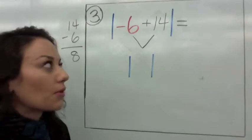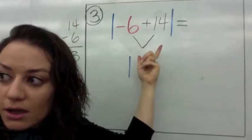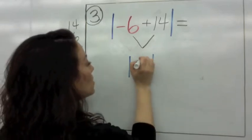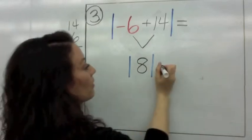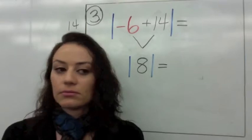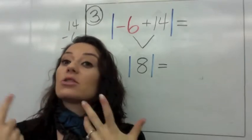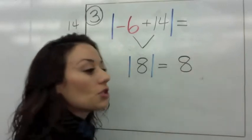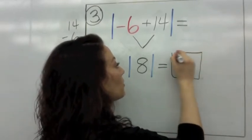What is the sign of the bigger number? What's the bigger number — 6 or 14? It's 14 and it's positive, so this is positive 8. Now we ask ourselves, what is the absolute value of positive 8? It's positive 8 — that means there are 8 units from 0 to positive 8. Put a box around your answer and get that down.